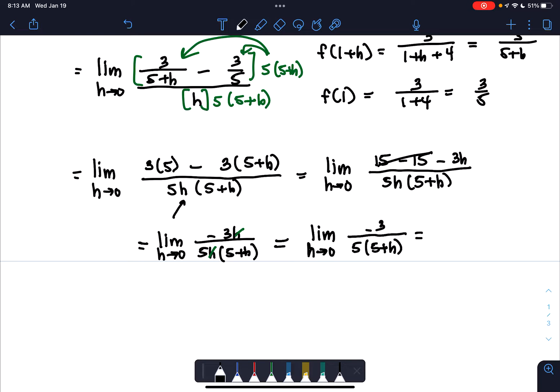Now we're at the point where we can substitute 0 for h. So now I'm going to drop the limit notation and say negative 3 over 5 times 5 plus 0, which is negative 3 over 25.